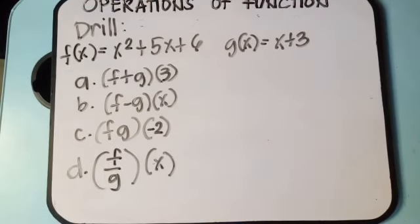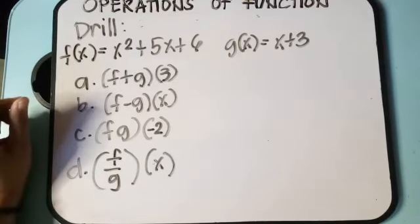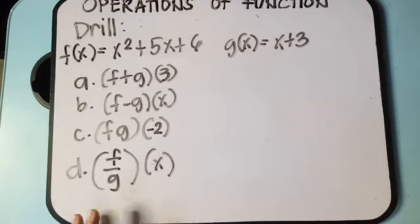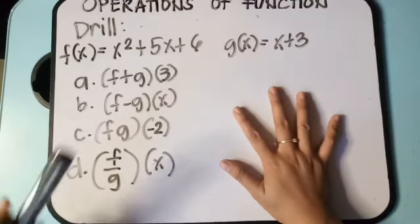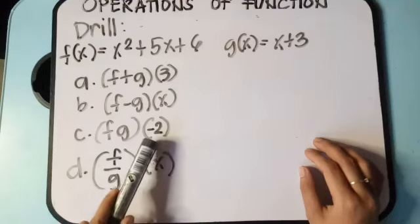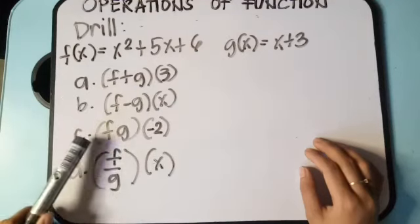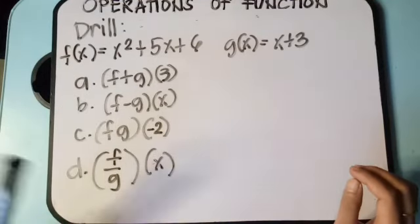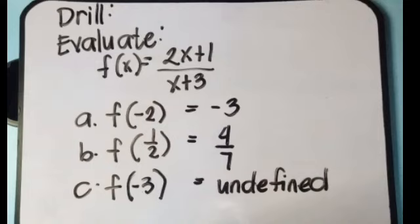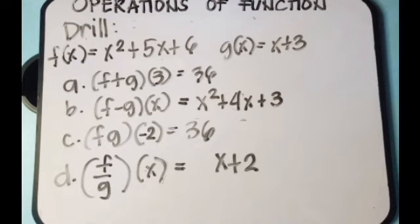For your drill, please answer this. We have two given functions: f of x is equal to x squared plus 5x plus 6, and g of x is equal to x plus 3. Solve these four problems: addition, subtraction, multiplication, and division. Note there are values of x given: 3 and negative 2. Once you get the final answer, substitute the value of x, just like evaluating a function. These problems are a combination of operations on functions and evaluating a function. The answers are: A is negative 3, B is 4 over 7, C is undefined, and for the operations: 36x squared plus 4x plus 3, 36, and x plus 2.